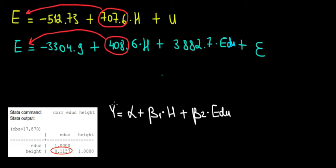So we have here this model where we regress earnings based on height and education. Now what's the intuition of the omitted variable bias? There are two requirements for it.